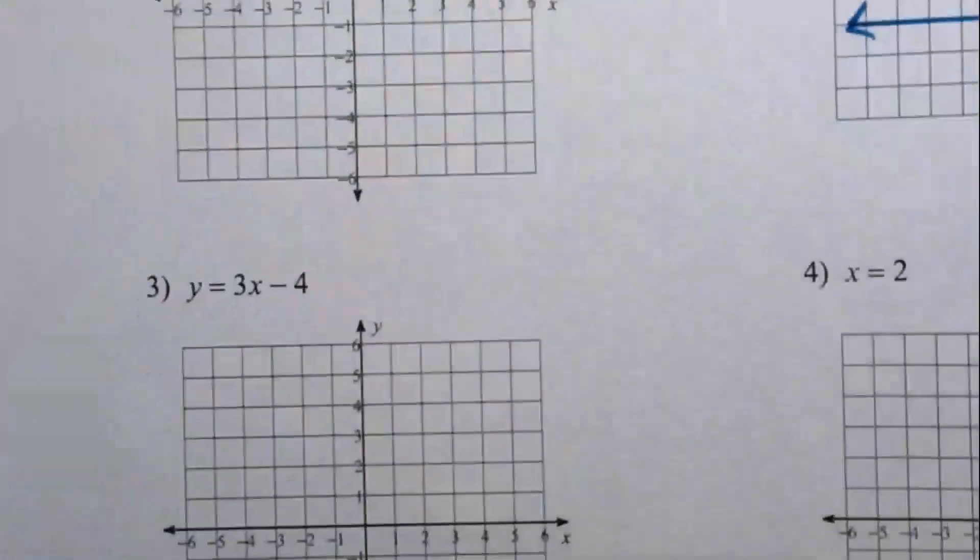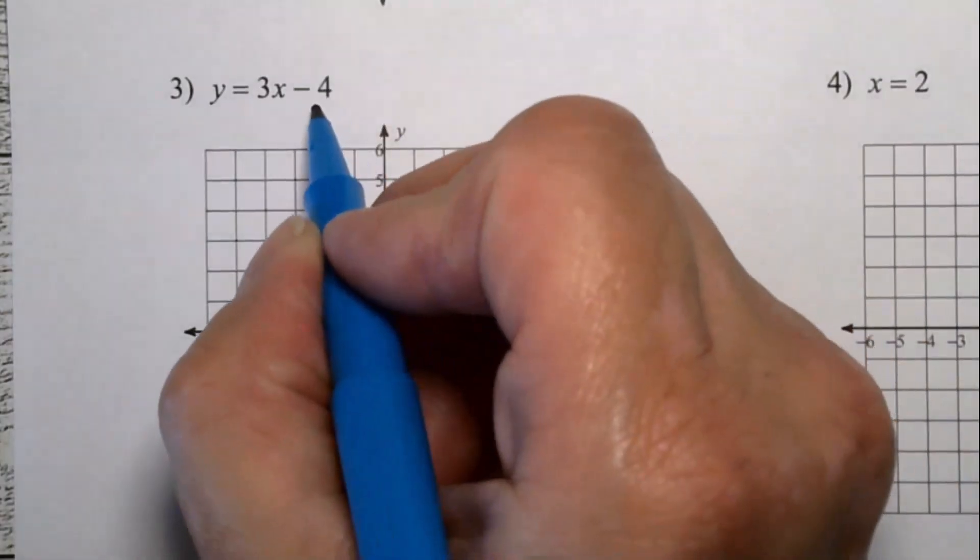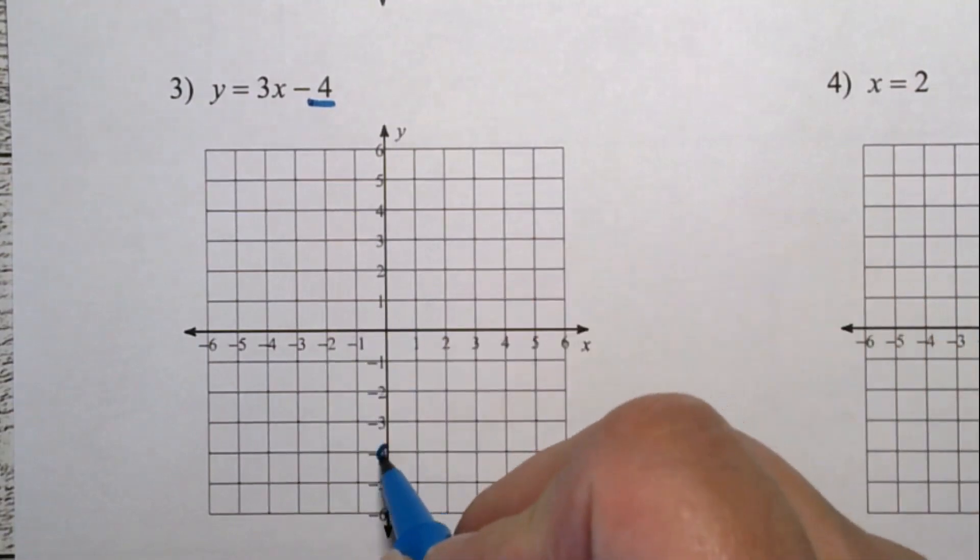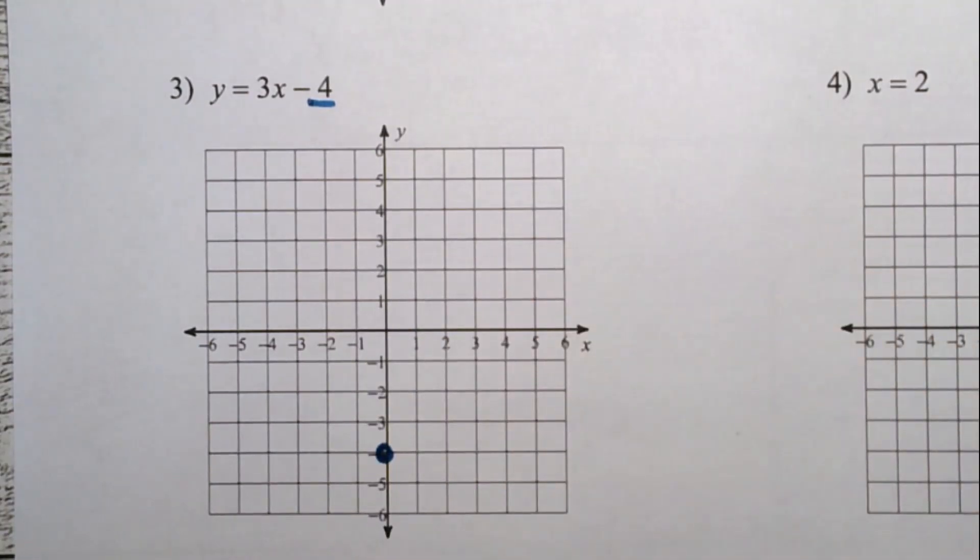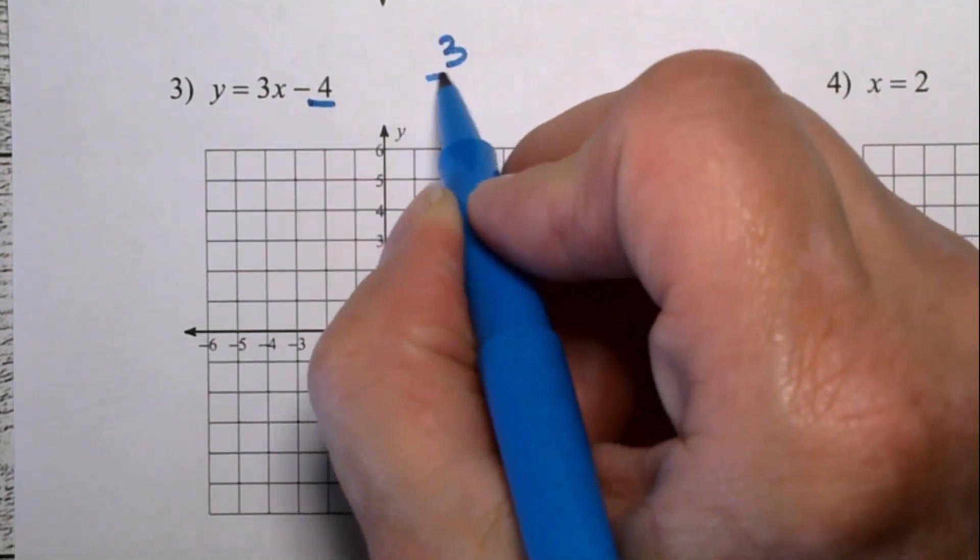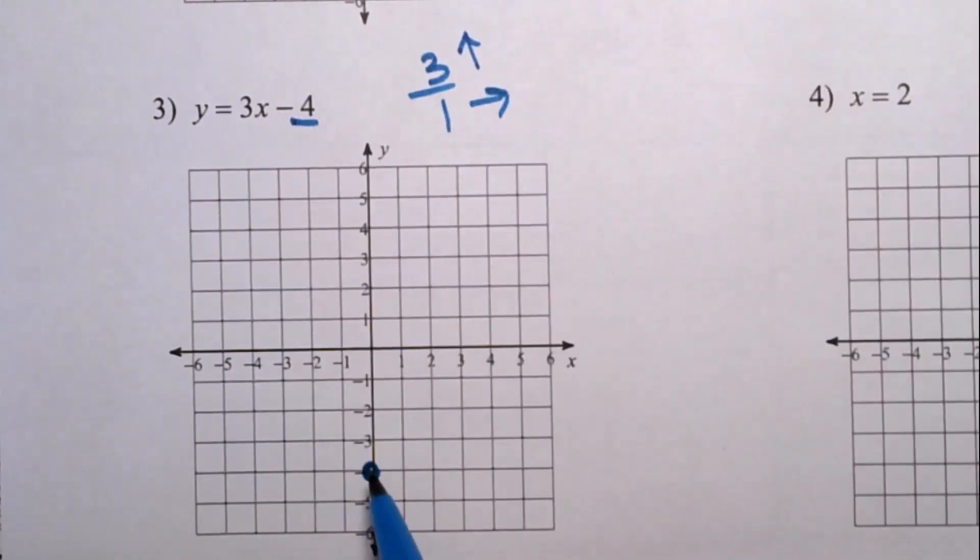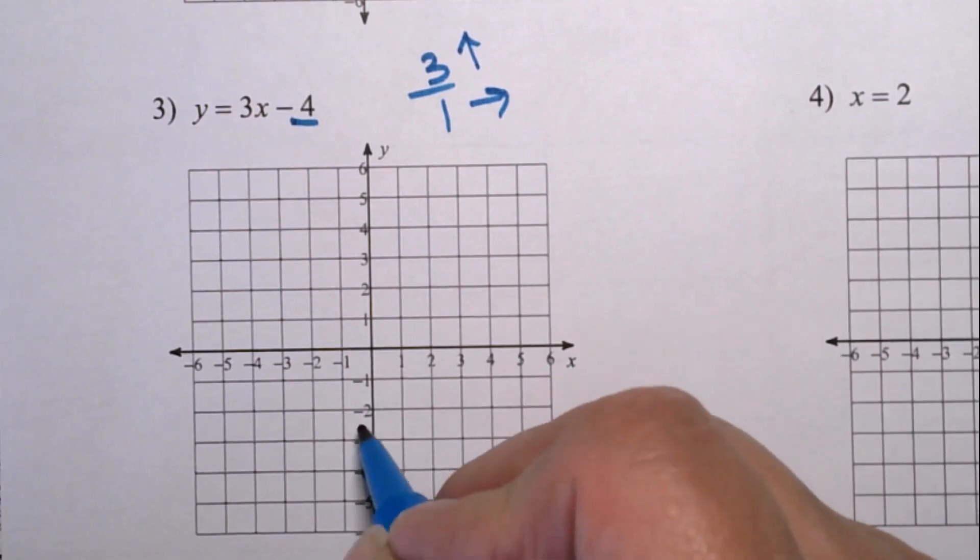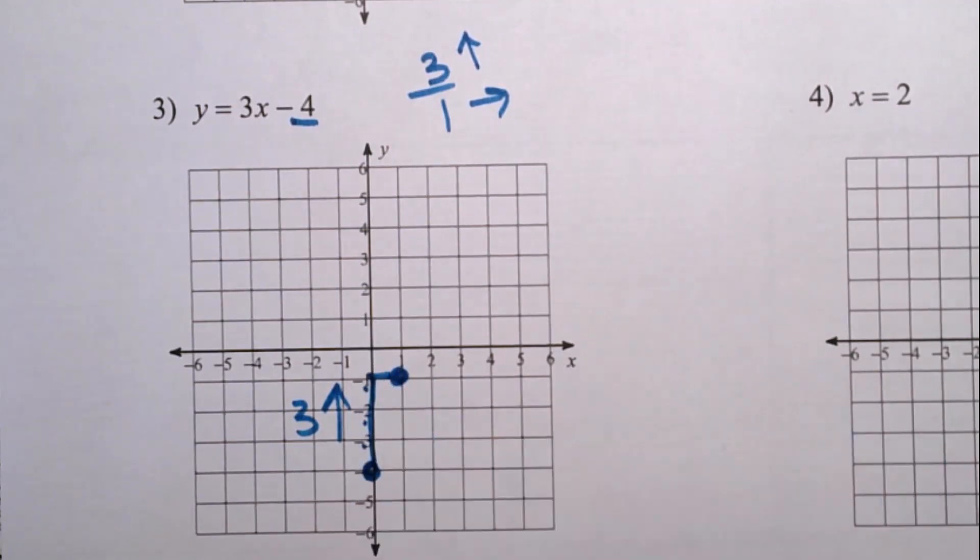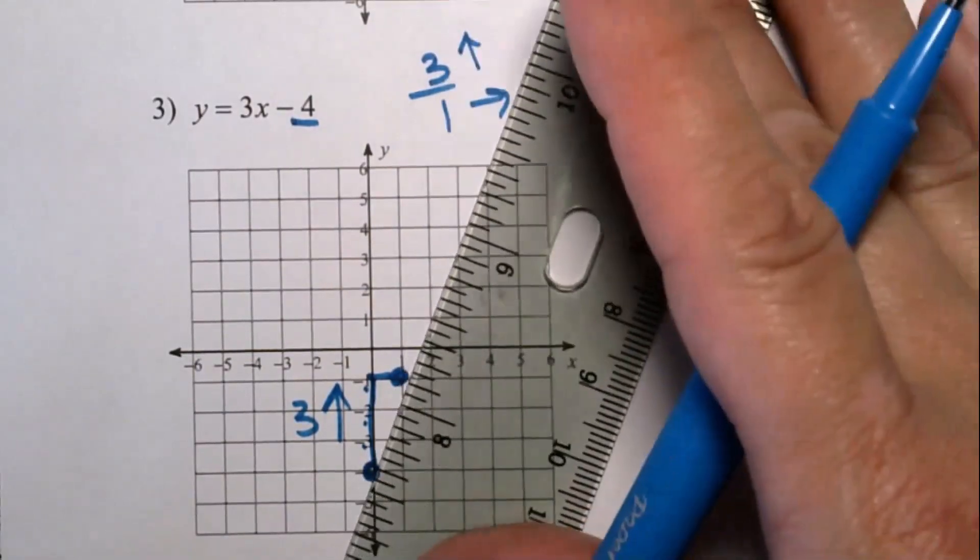Number three. This one is in slope-intercept form again. This time, the intercept is negative four. So I go down and put a dot on the negative four. That's our starting point. Then we use the slope. This is just the whole number three, but you have to think about that as three over one, which means we're going to be going up three and over one starting at this point. One, two, three. Up three. Over one. And there is the second point. And you draw the line. It goes through those two points. And you are finished with this graph.